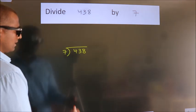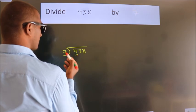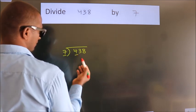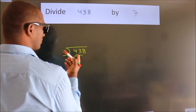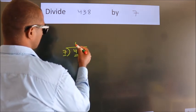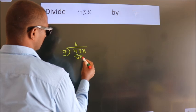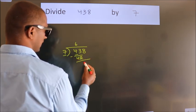Next, here we have 4, here 7. 4 is smaller than 7, so we should take 2 numbers: 43. A number close to 43 in the 7 table is 7 times 6 equals 42. Now we should subtract, we get 1.